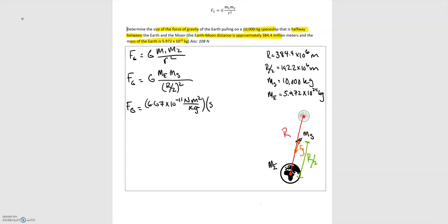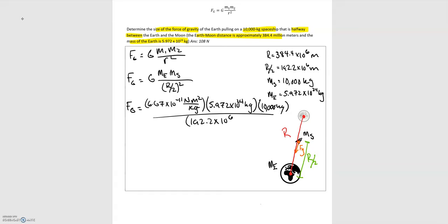That is multiplied by the mass of the Earth, 5.972 times 10 to the 24th kilograms, times the mass of the spaceship, 10,000 kilograms. The denominator is R over 2, which is 192.2 times 10 to the 6th meters, and that whole quantity is squared. Looking at units: we have kilograms times kilograms on top and kilograms squared on the bottom — those cancel. We have meters squared on top and meters squared on the bottom — those cancel too.